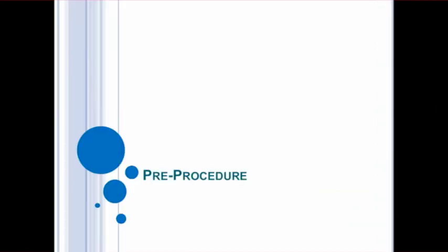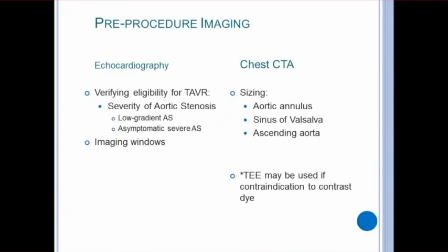Let's take a look at what parameters are needed for a patient to be a candidate for TAVR. Echo is used for patient selection to verify the severity of aortic stenosis. This can also include stress testing for those with low-flow, low-gradient aortic stenosis, or asymptomatic AS. Additionally, echo allows us to evaluate the patient's imaging windows. If they have suboptimal transthoracic windows, a TEE, or transesophageal echo, should be considered for imaging during the procedure. TEE may also be used for sizing the valve if the patient is unable to get a chest CT.